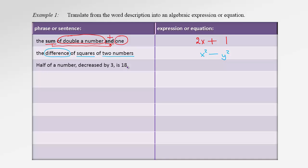The next problem has a period, indicating a sentence, so we'll write an equation. 'Half of a number, decreased by 3 is 18.' The word 'is' indicates the equal sign, so something equals 18. The comma tells us to perform 'half of the number' first: one-half times x. Then decreased by 3: minus 3. So the equation is (1/2)x − 3 = 18.